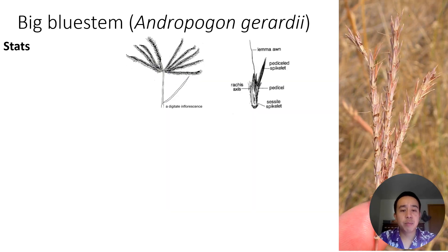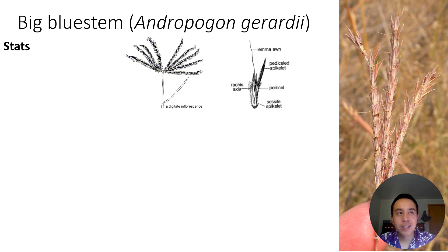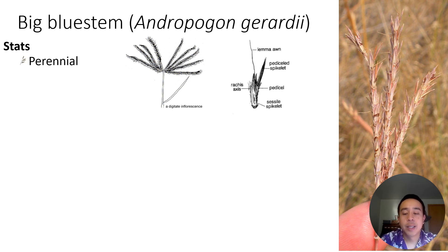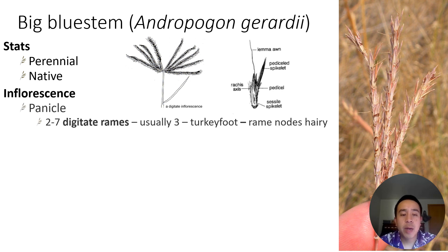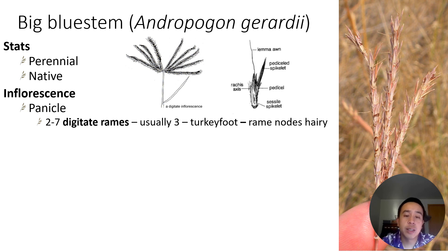First off, we have big bluestem, Andropogon gerardii, a very common species across the United States, except for in the West where we are, but very common in the Midwest and in the East. It's a perennial native plant and it's really important forage. It has an inflorescence that we might describe as a digitate panicle, and you can see a digitate inflorescence in this diagram here.